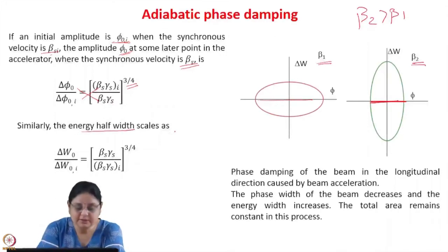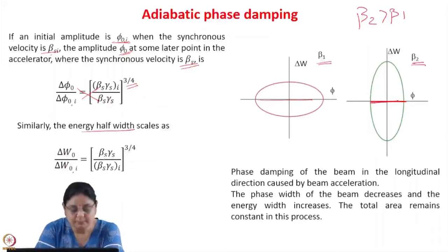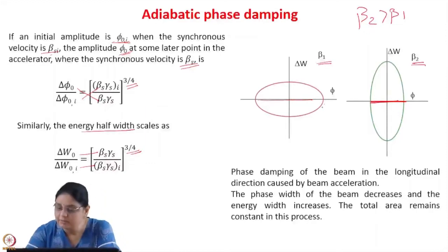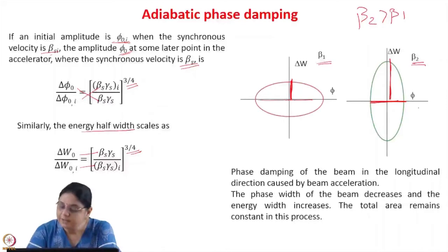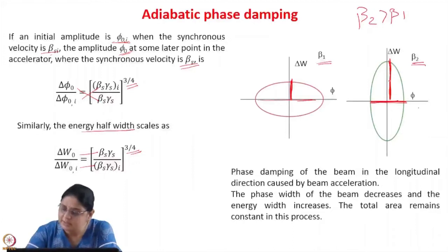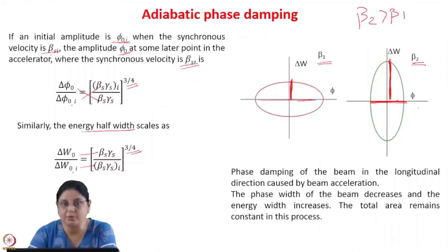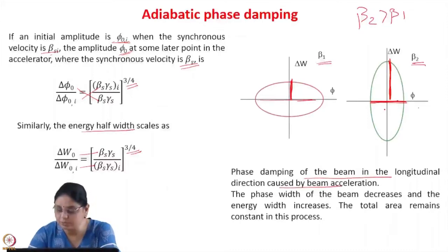Similarly, the energy width scales as delta_w0 / delta_w0i = (beta_s * gamma_s / beta_si * gamma_si)^(3/4), a direct relationship. So as acceleration happens, the energy half-width increases. The phase half-width is decreasing and the energy width is increasing. The area of both ellipses remains the same, and this holds when the acceleration rate is small. Phase damping of the beam in the longitudinal direction caused by beam acceleration: the phase width decreases and the energy width increases, while total area remains constant.